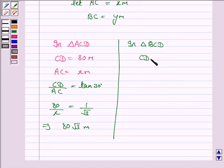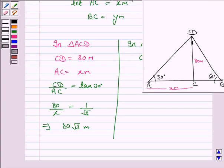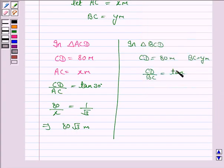Similarly in triangle BCD we have CD is 80 meter, BC is y meter and CD upon BC is equal to tan 60 degrees. This is tan 60 degrees because here the angle of elevation is 60 degrees.